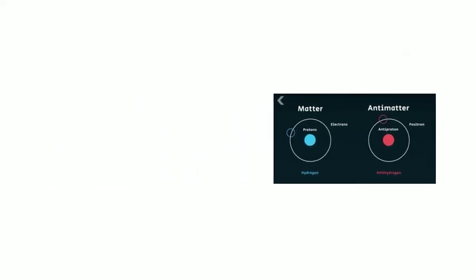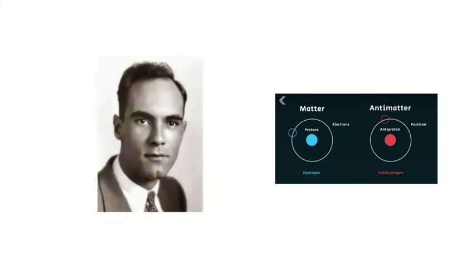In 1932, the American physicist Carl David Anderson, born 1905, died 1991, discovered the anti-electrons and called them positrons.